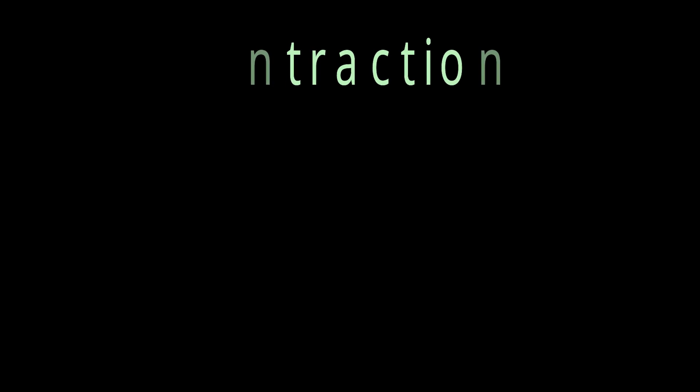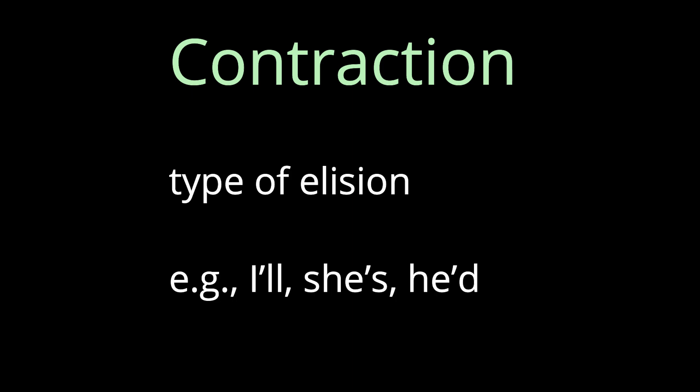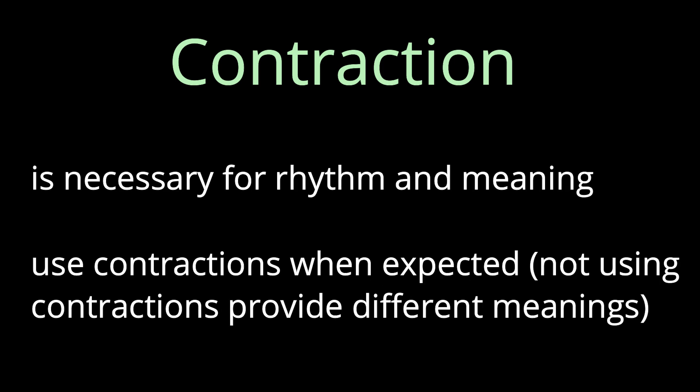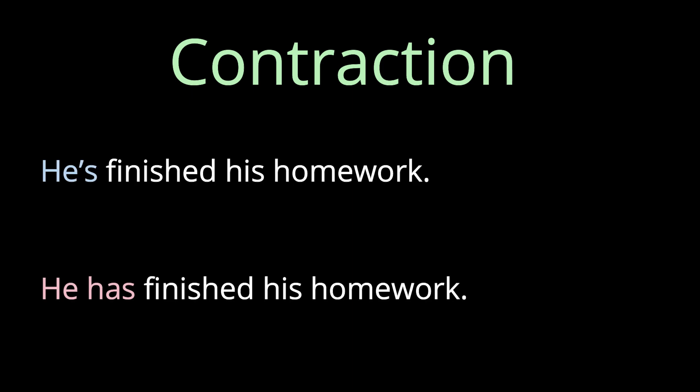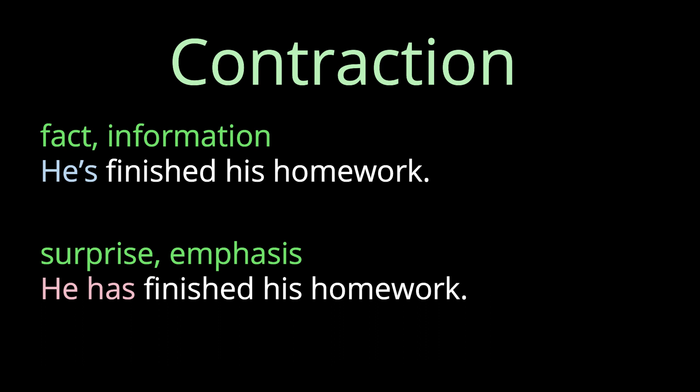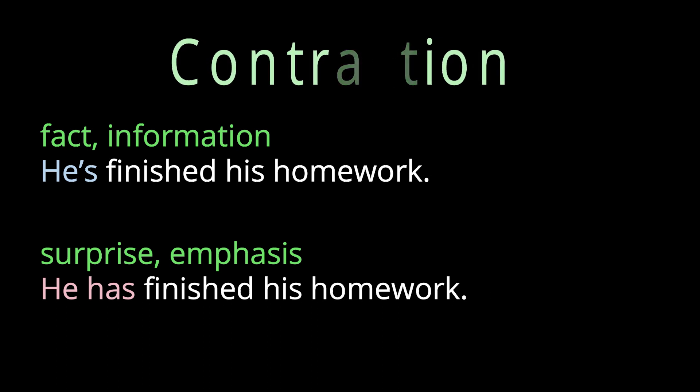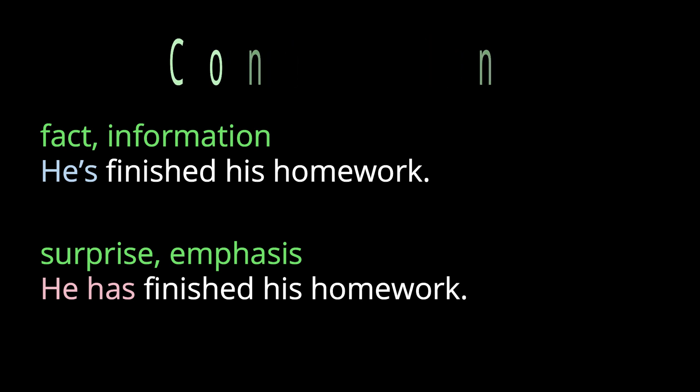We can see elision clearly in contracted forms. For example: I'll, she's, he'd — vowels, consonants, or both can be elided in contraction. Contractions are a necessary ingredient for rhythm and clarity, since by reducing them we can emphasize content words. If we do not use a contraction when expected, we are signaling something different. For example, "He's finished his homework" states a fact, but "He has finished his homework" signals something like surprise or emphasis. So we should use a contracted form when expected.